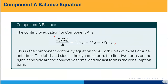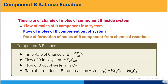This is the component continuity equation for component A. From this equation we can see how the concentration of A changes with time. The left-hand side is the dynamic term. The first two terms on the right-hand side are the convective terms, and the last term is the reaction term.